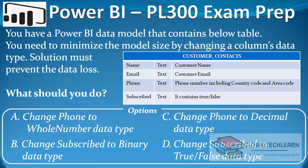Hello friends, welcome to Global Take Learn. In today's video we will discuss a Power BI data model related question to reduce the model data size. The question is: we have a table called Customer Contacts that contains four columns — name, email, phone, and subscribed. The name field contains the customer name as a text data type. The email field contains the customer email, also as a text data type. The phone number field includes the country code and area code.